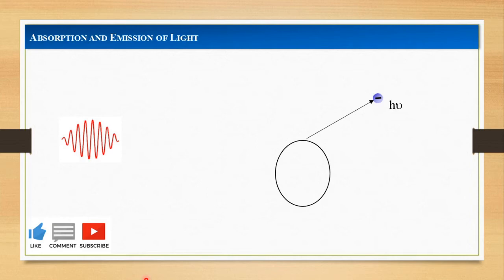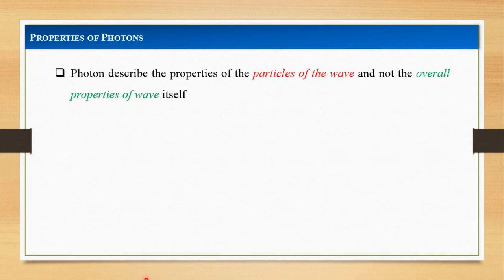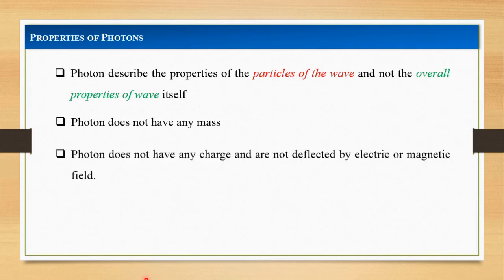This atom also has some important properties. Photons describe the properties of particles of the wave and not the overall properties of the wave itself. Also, photons do not have any mass, do not have any charge, and are not deflected by electric or magnetic fields. In empty space, the photon moves at the speed of light.